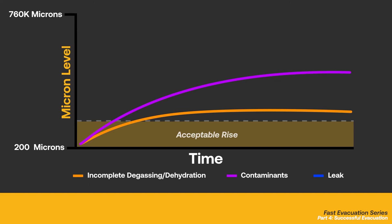If the rise trend is steady and doesn't appear to be slowing down, this is an indicator of a system leak. With a system leak, the micron level will rise consistently until eventually reaching atmospheric pressure. The severity of the leak is directly related to the speed at which the level is rising. Leaks can vary from pinholes in the line set to missing port caps. Identifying and resolving the leak is the only way to address this issue.